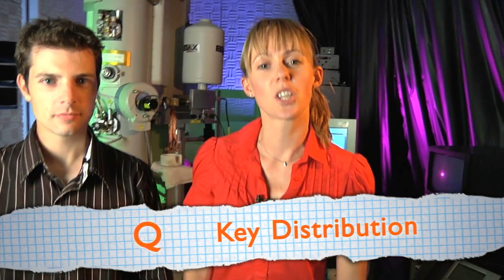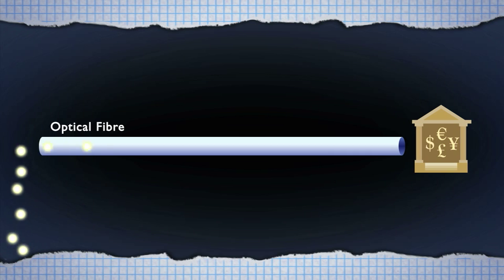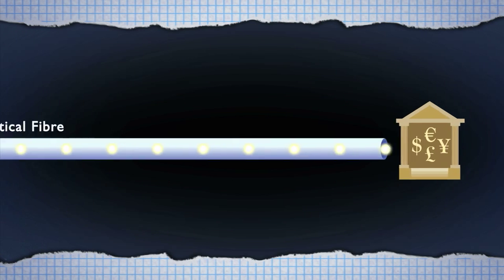Quantum key distribution or QKD is a brand new high tech industry based on quantum mechanics with a billion dollar annual market. With QKD the secret key that unlocks the encrypted message is sent as a stream of photons from one bank to another down an optical fiber one at a time.